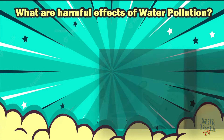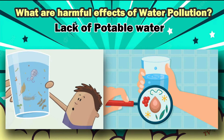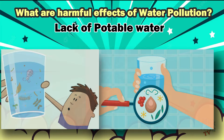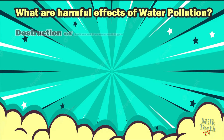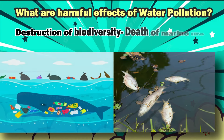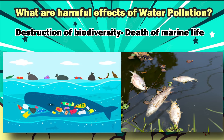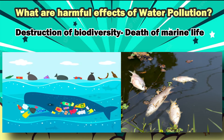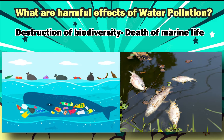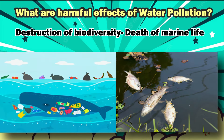Water pollution also creates a shortage of potable water — clean drinking water — which is a cause of concern for humanity. Water pollution leads to the destruction of biodiversity and the death of marine life. Deep down in the ocean there are millions of living creatures. These creatures have become victims of plastic pollution as well as chemicals and fertilizers washed into the water, making it very unfit for all marine creatures.